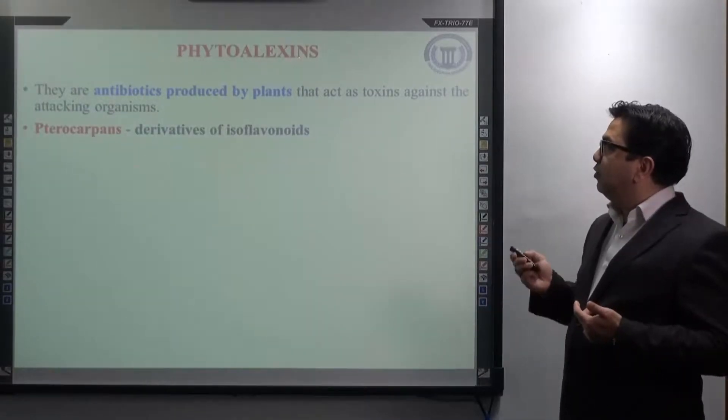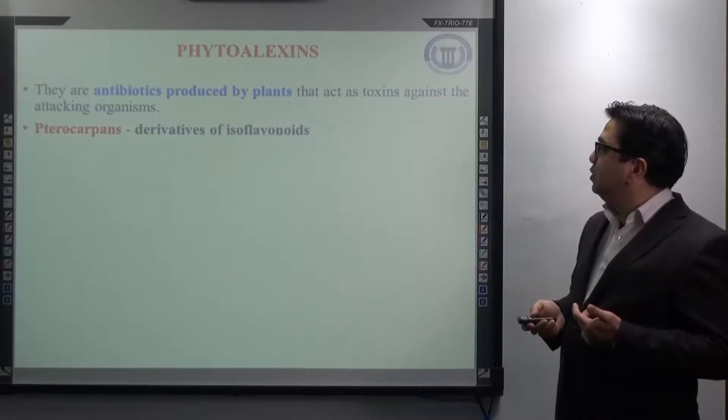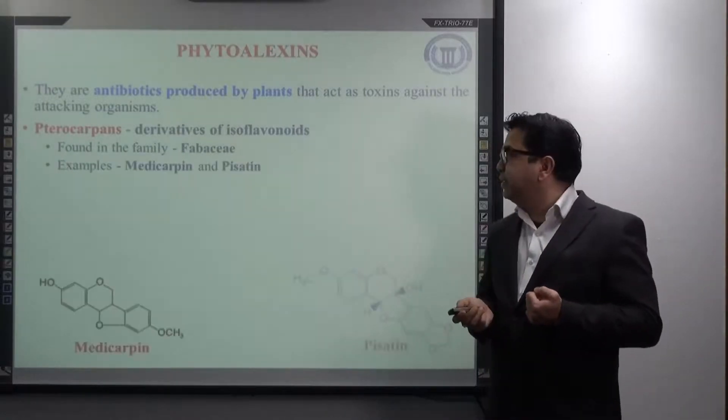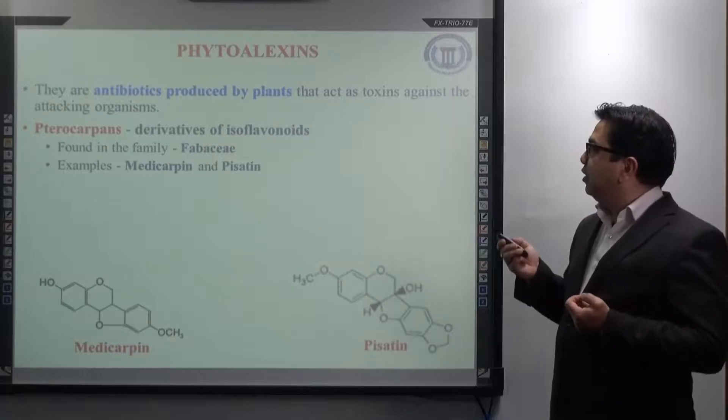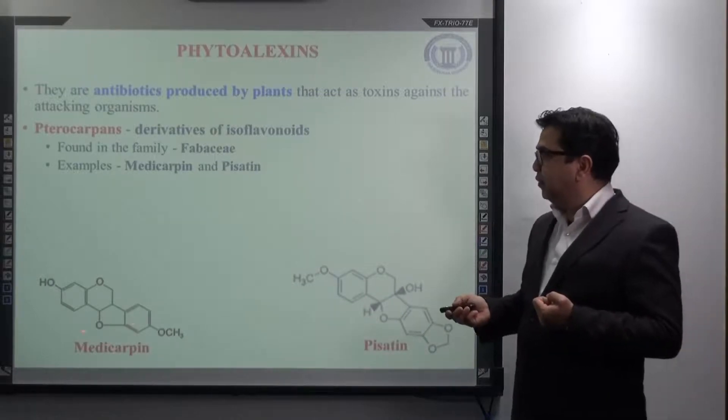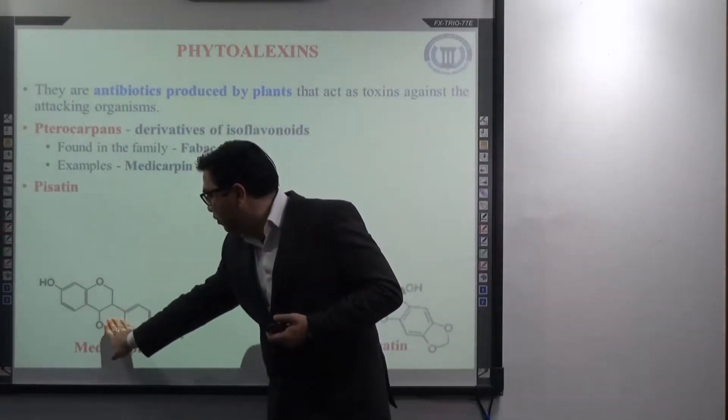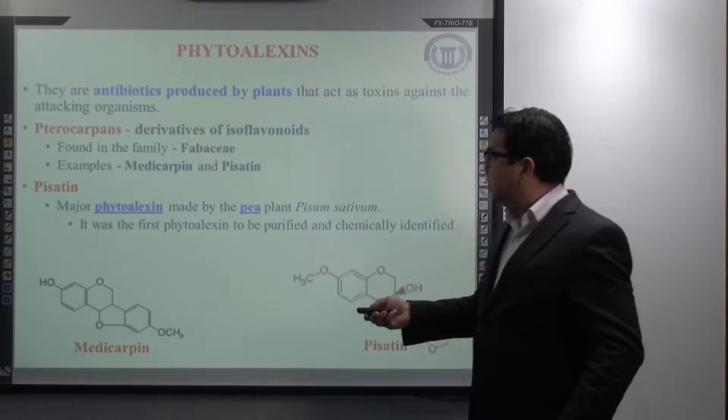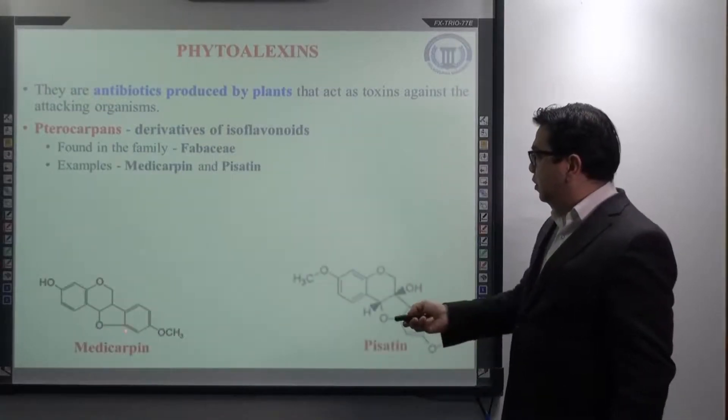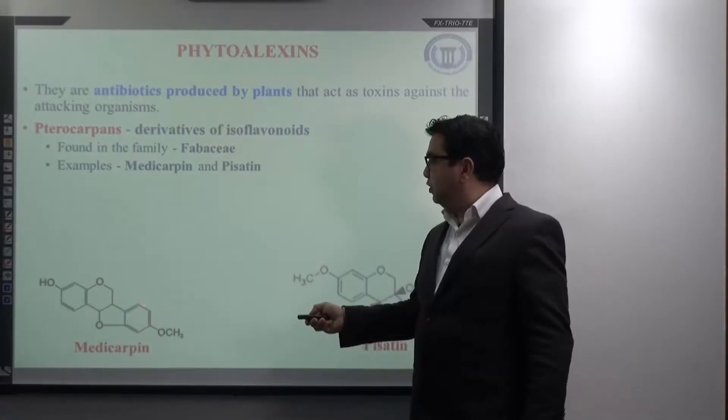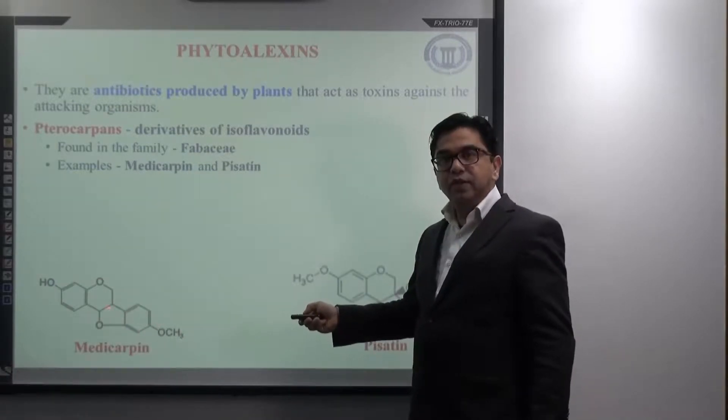Most important example of phytoalexins are pterocarpans, which are mainly the derivatives of isoflavonoids. They are mainly found in the family Fabaceae. Two examples of phytoalexins are medicarpin and pisatin. Look at the structure of medicarpin. If you just remove this bond from here, you see it looks like, if you count the numbering from here, one, two, three, this is an example of isoflavonoid because the phenyl ring B is attached to the third position of ring C.